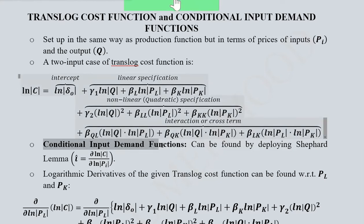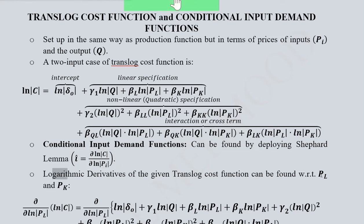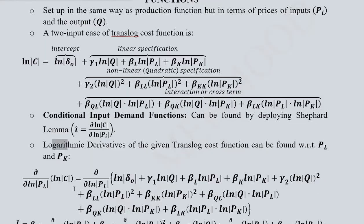The conditional input demand functions can be found by applying Shephard's Lemma, which gives us the input demand functions once we differentiate the cost function with respect to the price of that input. Here the natural log of the cost function is used because it is the translog cost function, and differentiation will be logarithmic since we are dealing with variables in their natural logarithmic form. We will do this respectively for the price of labor and the price of capital.